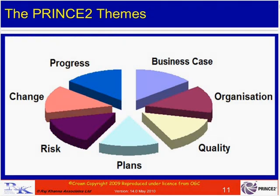For example, the business justification principle is supported by the business case theme. The business case records the reasons for doing the project — the benefits, disbenefits, timescales, costs, etc. — allowing us to compare what we are investing against what we will get out of it. In addition, the risk theme supports continued business justification: if the level of risk increases, the justification may no longer be valid, in which case we either prematurely close the project or change direction.